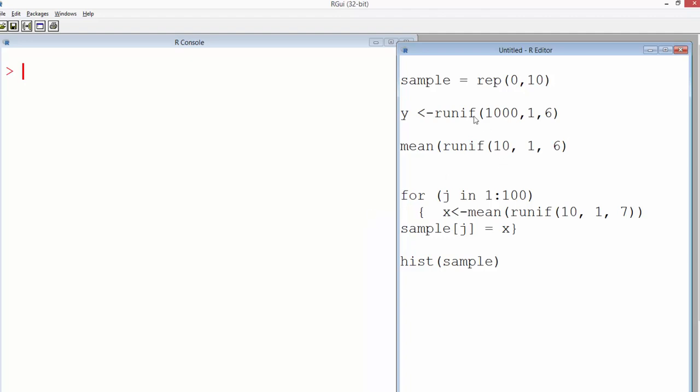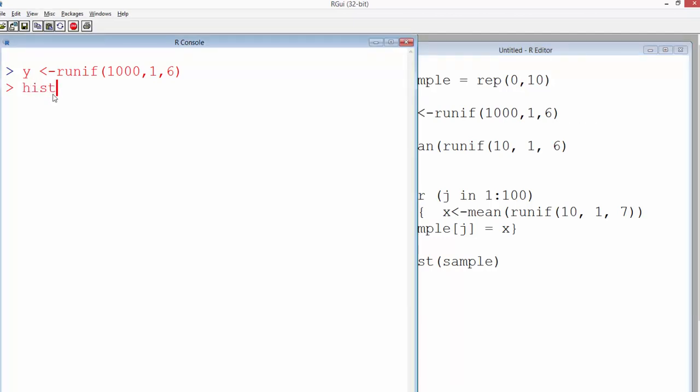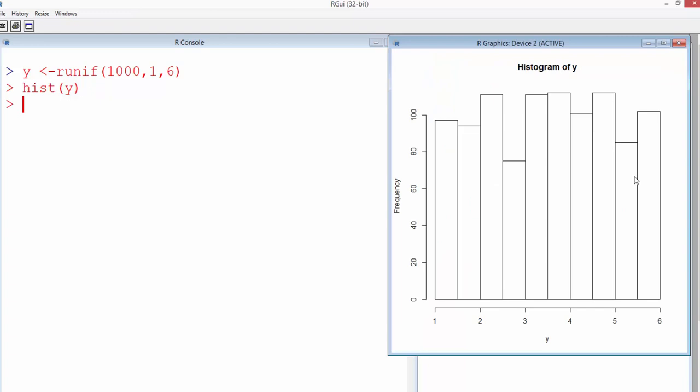So how do we get that? We run the runif function, and that is going to provide us with uniformly distributed values. And we'll save that in y. So we run that and let's plot the histogram. And you will see that it's not normally distributed.